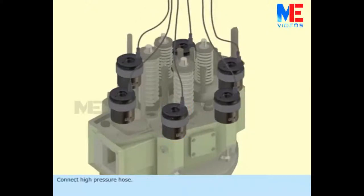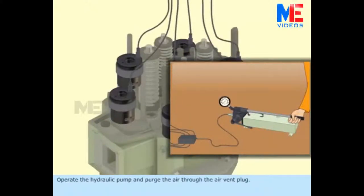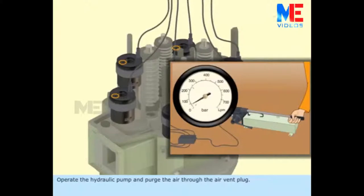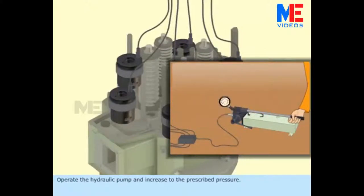Connect high pressure hose. Operate the hydraulic pump and purge the air through the air vent plug. Operate the hydraulic pump and increase to the prescribed pressure.